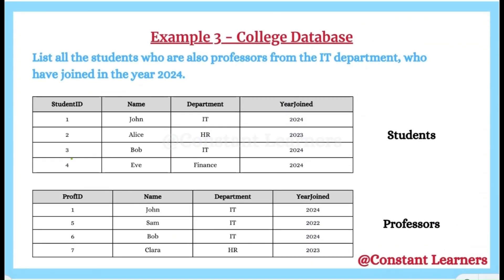Let's take the next example based on a college database. We have to list the names of all students who are also professors from the IT department who joined in the year 2024. We have two tables: a students table and a professors table. The intersection will be performed on the name columns from both tables, but with the condition that the department must be IT and the year joined must be 2024.